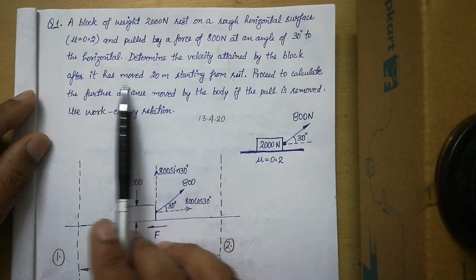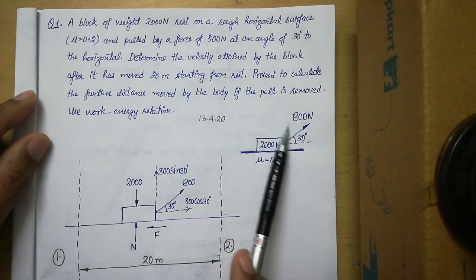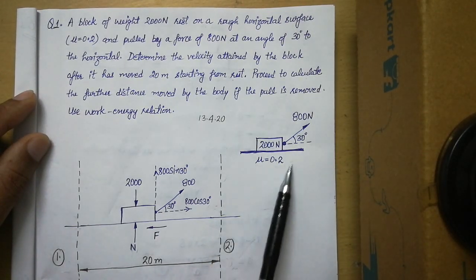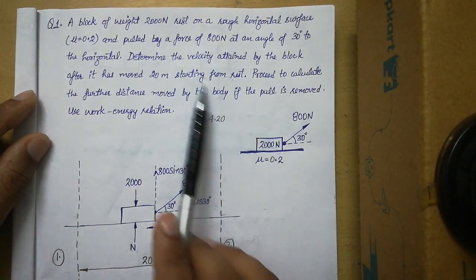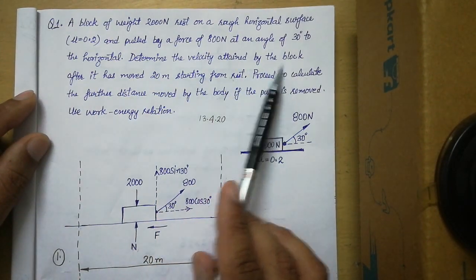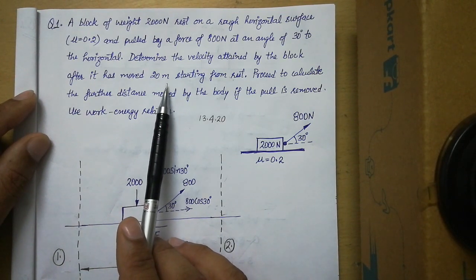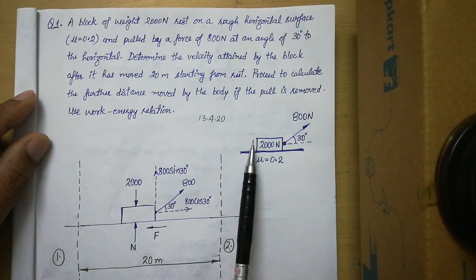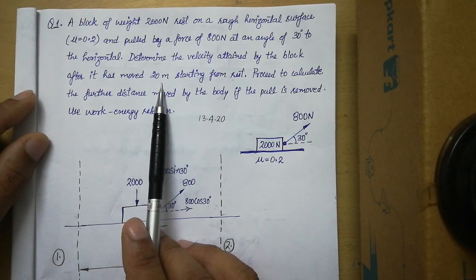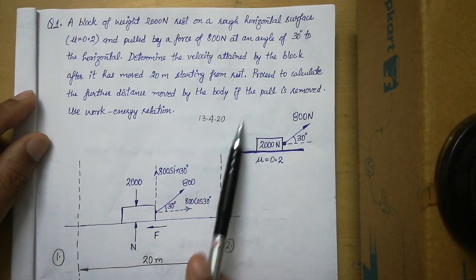There are a few important things to note. The problem says 'starting from rest,' which means the initial stage of the block is the rest stage — Stage 1 is rest. We have to find the velocity attained by the block after it has moved 20 meters, meaning the distance between Stage 1 and Stage 2 is 20 meters. Let us first find the free body diagram for this particular problem.